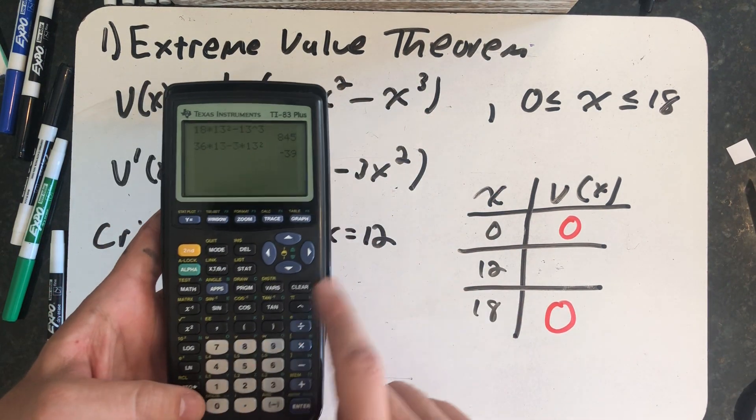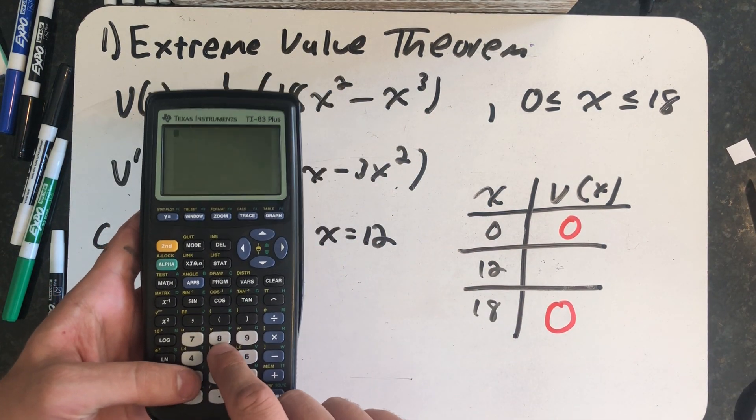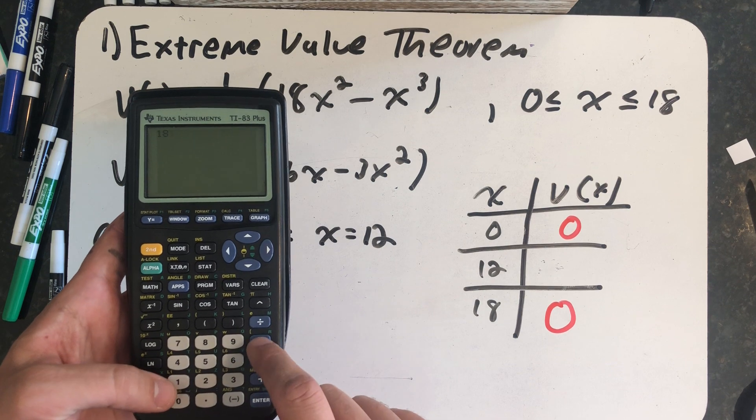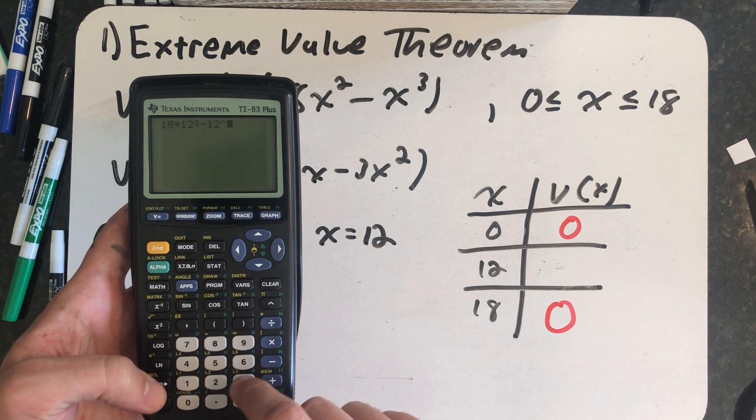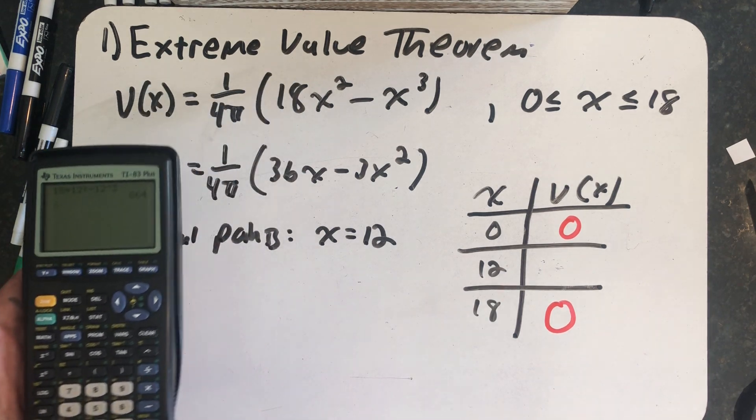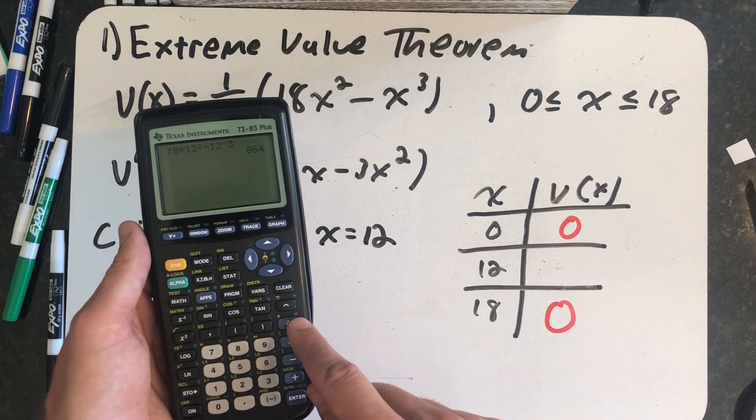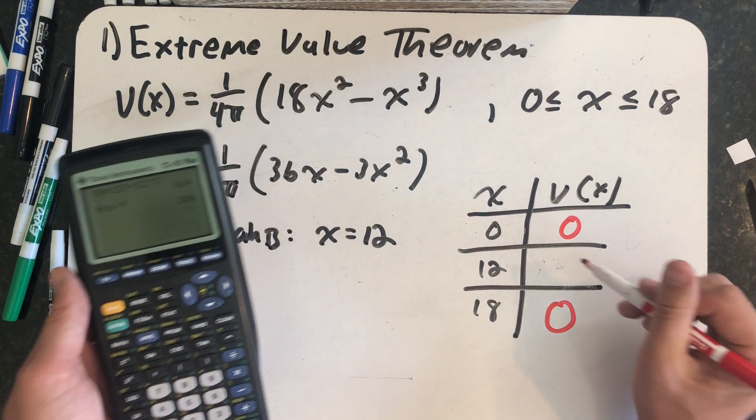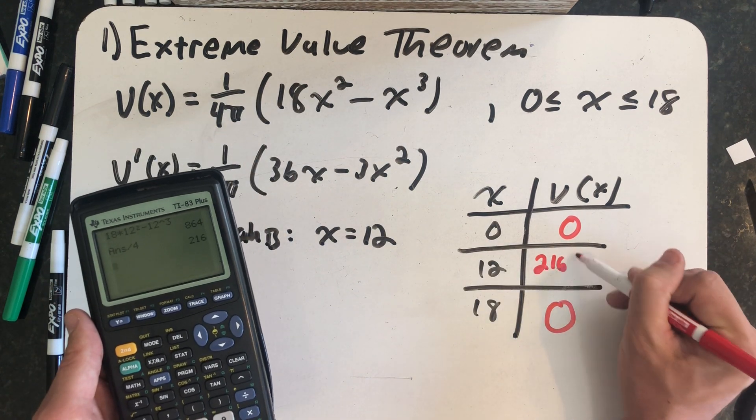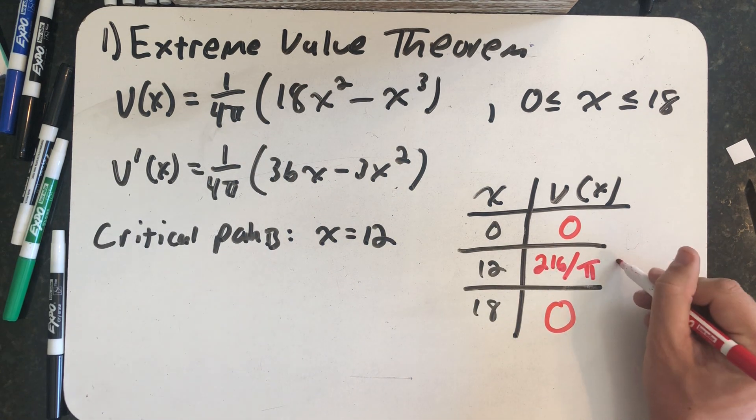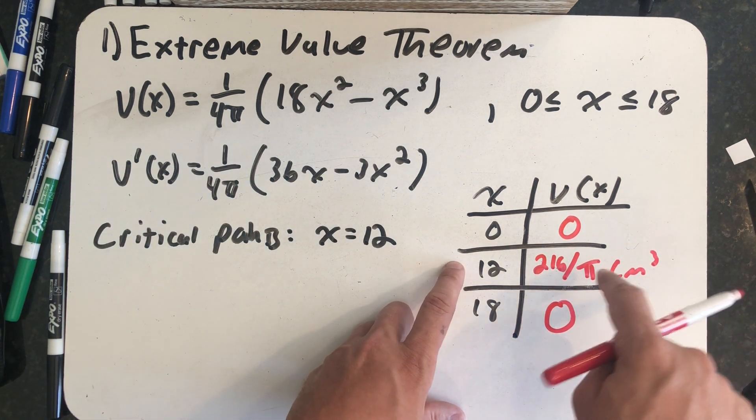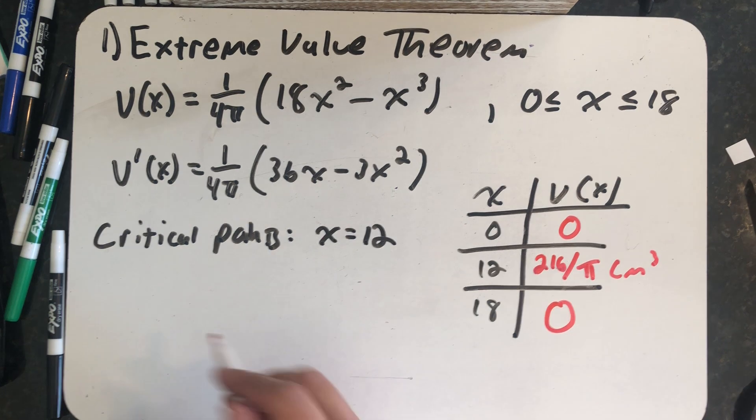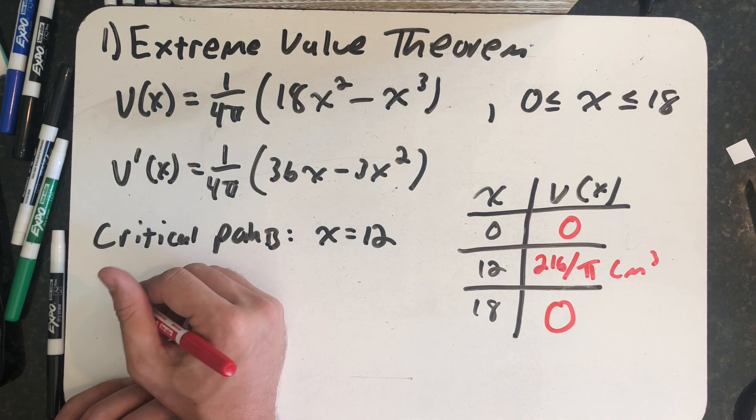Let's work on the inside of the parentheses first. So I have 18 times 12 squared minus 12 to the third power is 864. I'm going to divide that by 4. And the volume would have to be 216 over π cubic centimeters. That's clearly the biggest thing. These two things are the smallest thing. So the maximum occurs when x is 12.